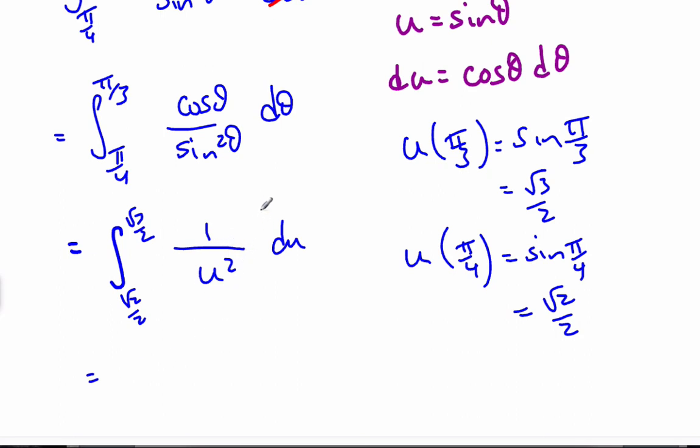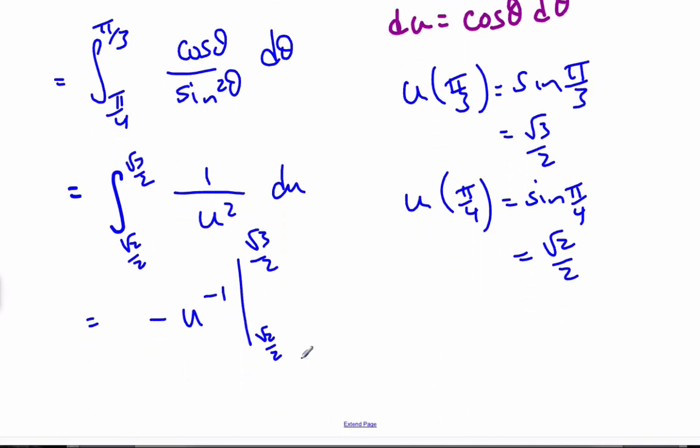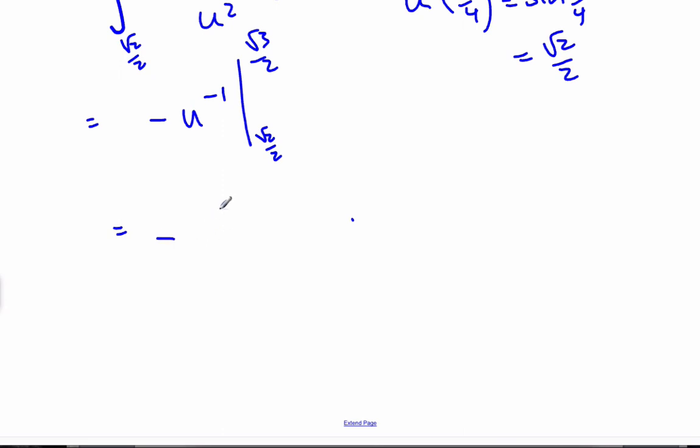I take the integral of this, and remember this is a minus 2, so I get u to the minus 1 times a negative. And I'm going to take this from root 2 over 2 to root 3 over 2. When I do that, I get negative, this substantiated flips it to 2 over root 3 minus, put this in here, I get 2 over root 2, which is then 2 over root 2 minus 2 over root 3.